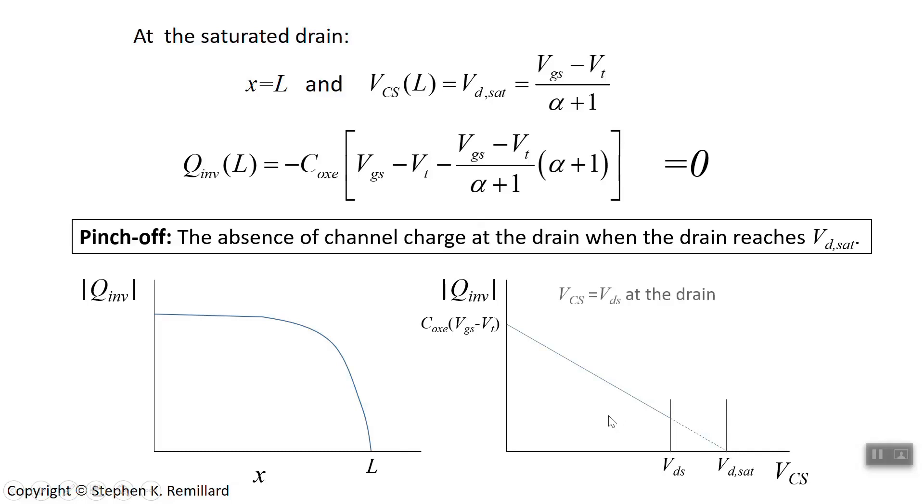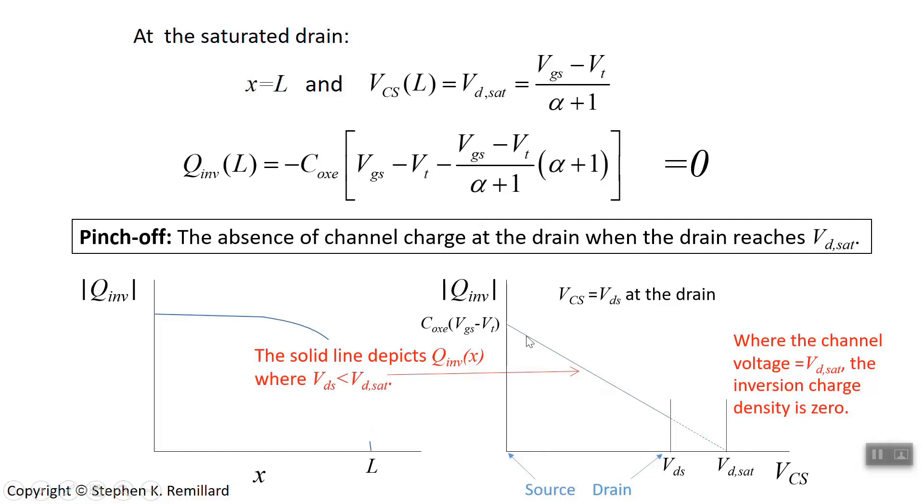Let's also look at this inversion charge as a function of potential throughout the channel. The first graph here is the inversion charge as a function of where you are in the channel. Here's the inversion charge concentration as a function of the potential in the channel, which by proxy is the same thing as x, because V sub cs depends on x. When V sub cs, the channel source voltage, is equal to Vds, that means you're at the drain. So like I said, this is a proxy. The origin here is the source, because at the source, the channel source voltage equals 0. At the drain, the channel source voltage is Vds.